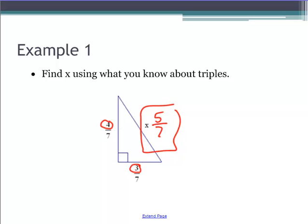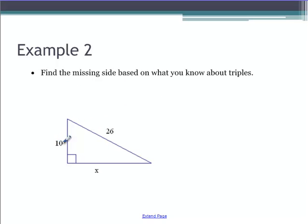Next example: 10 and 26. Okay, those aren't part of our triples, but 26 is 13 times 2, 10 is 5 times 2. They're multiplied by the same thing, so this one is something times 2. Our triples were 3-4-5—that's not it—but the other one is 5-12-13. Let me switch this color, plug in 12 there, and 12 times 2, X is 24.